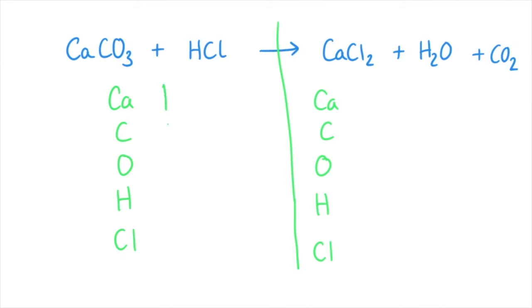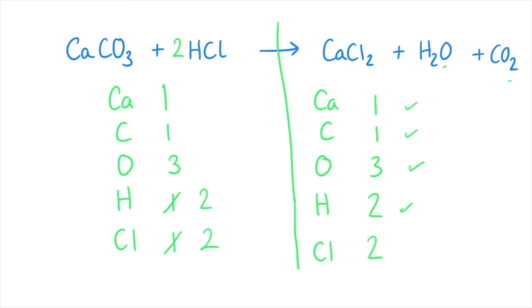We've got one calcium, one carbon, three oxygens, one hydrogen, and one chlorine. On the other side, one calcium, one carbon. Two lots of oxygen appearing there, so we've got to add them together, which is going to make three. Two hydrogens and two chlorines. So everything except the hydrogen and chlorines are balanced. So two in front of the hydrogen chloride — make both changes because it changes the hydrogen and the chlorine — and you can see we've balanced the equation. Well done if you got it right.